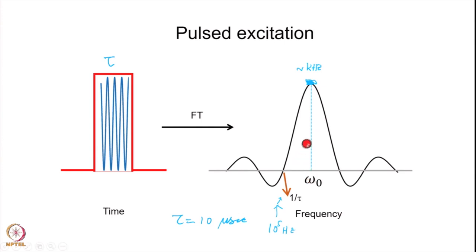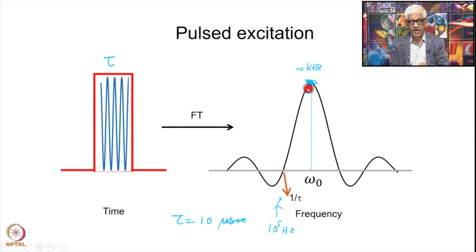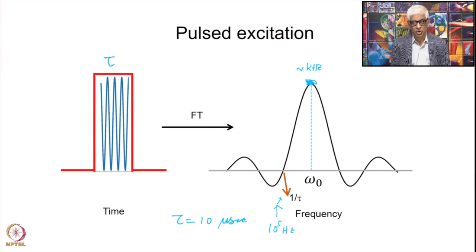If the RF is at a frequency omega naught, it produces various frequencies with different amplitudes over a very large range. If the pulse is 10 microseconds, then you generate about 10^5 Hz on either side of omega naught. We select only the small flat region on top, where excitation efficiency is the same for all frequencies — this can easily be a few kilohertz, which is sufficient for the range of our NMR spectrum.